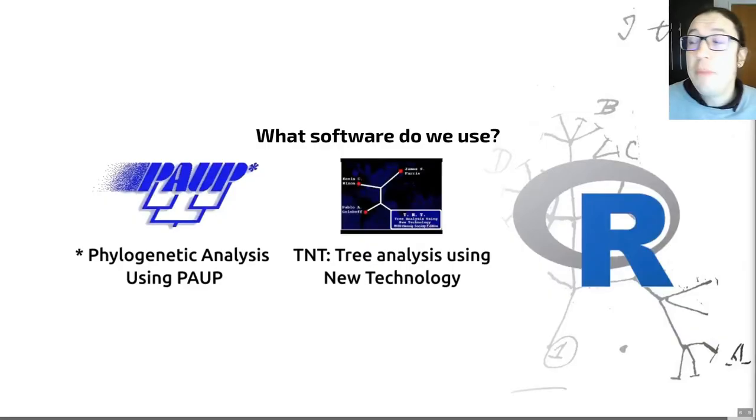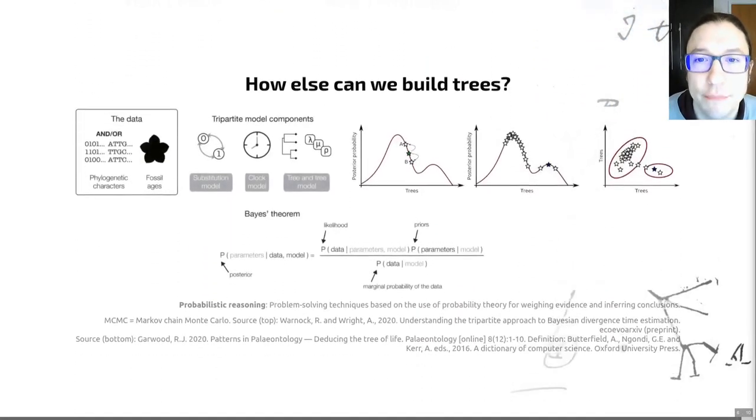We can use a number of different pieces of software to actually do these tree searches that I've mentioned. One is called PAUP, so this is a recursive name, Phylogenetic Analysis Using PAUP, which obviously PAUP is then Phylogenetic Analysis Using PAUP etc., which is quite old now. It's been around for a long time but lots of people still use it because it's very user-friendly. There's another piece of software called TNT, Tree analysis using New Technology, which is used by quite a few people who have very large data sets they want to analyze using parsimony. And if you so wish you can actually do parsimony searches using the statistical programming language R because there are lots of packages that allow you to do that. All of these have their different strengths and weaknesses that you will get to know if you ever happen to be building phylogenies.